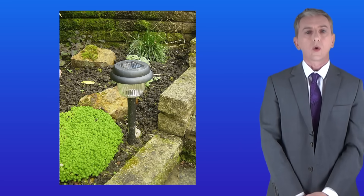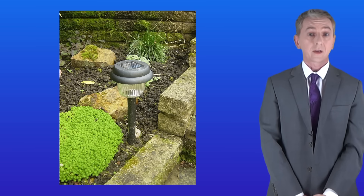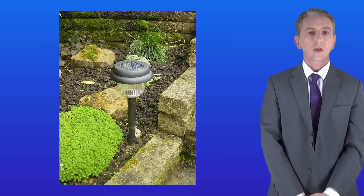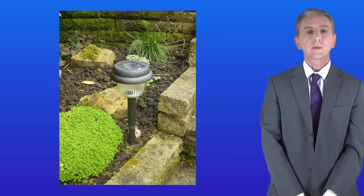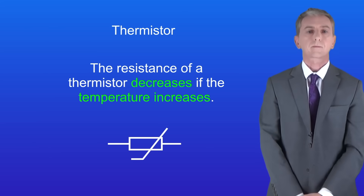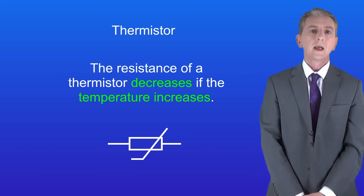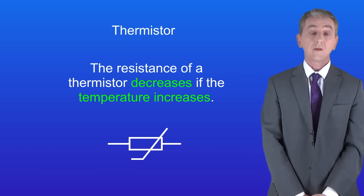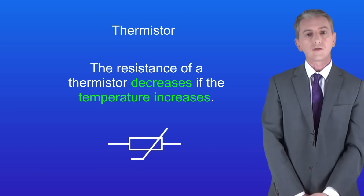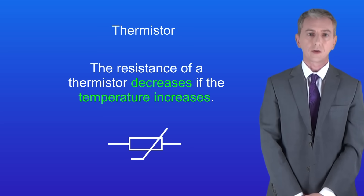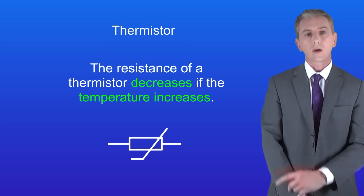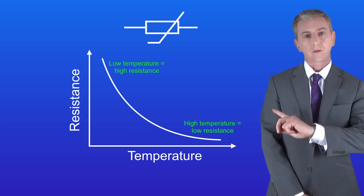In this video we're going to look at another type of resistor which is extremely useful. It's called a thermistor and I'm showing you the symbol for a thermistor here. The key feature of a thermistor is that its resistance decreases if the temperature increases, and we can see that on this graph.